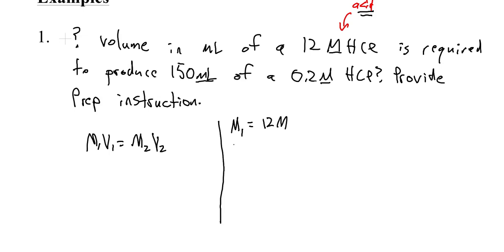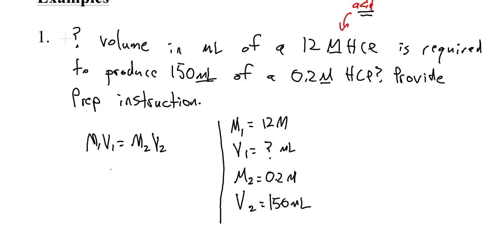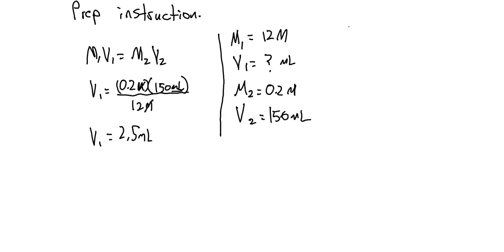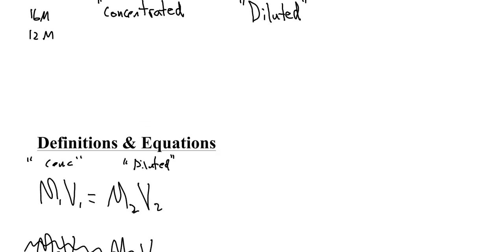M₂ is our diluted molarity, 0.2 molar, and V₂ is 150 milliliters. Plugging in and rearranging: V₁ = (0.2 molar × 150 mL) ÷ 12 molar. The molarity units cancel, and V₁ = 2.5 milliliters. That's the volume of concentrated HCl solution needed. The preparation instructions help give a real understanding of what this means.